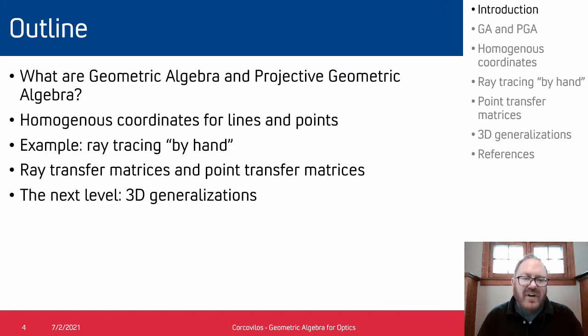So the outline of my talk: I'll talk briefly about what geometric algebra and projective geometric algebra are. The latter is the flavor of GA that we're using in our calculations. And to do that I need to define homogeneous coordinates just to give you the context for the tools we're using. Then I'll work through an example of ray tracing by hand, in other words what we do in freshman physics with a ruler and pencil, but I'll put equations to it.